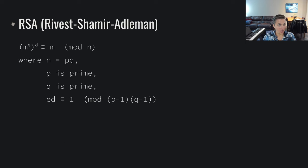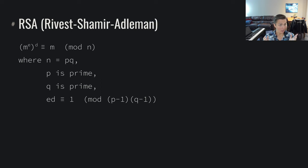RSA, named after the cryptographers that created it, exactly exploits this property. We have m to the e, where m is our message, we raise it to e, then raise that to d, and that becomes m — all within mod n. Here n equals p times q, our two prime numbers multiplied together. And e times d is congruent with 1 within mod (p minus 1)(q minus 1), using the previous results from Euler's theorem. So we can take m to the e to the d and say that is congruent with m.